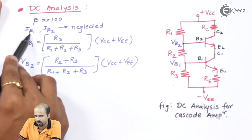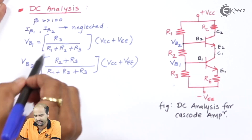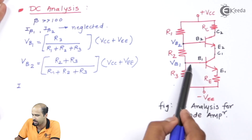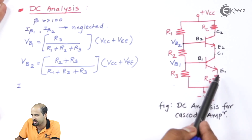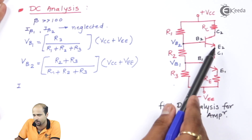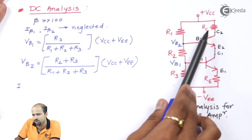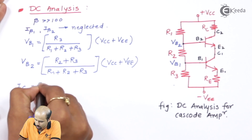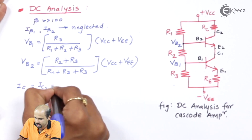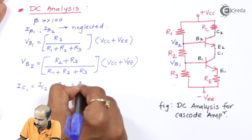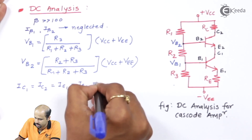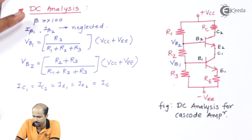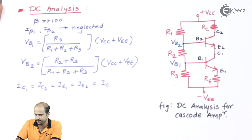Assuming IB1 and IB2 are neglected, all collector and emitter currents become equal. If IB is zero, then IC1 equals IE1, and IC1 itself equals IE2, so IE2 equals IC2. We can conclude that IC1 equals IC2 equals IE1 equals IE2 — all equal to a single value IC — when beta is much much greater than 100.